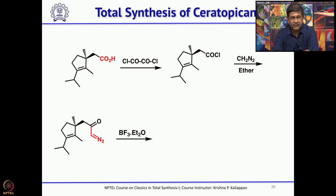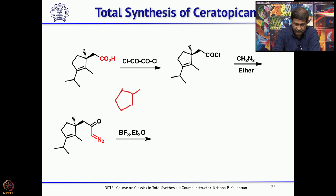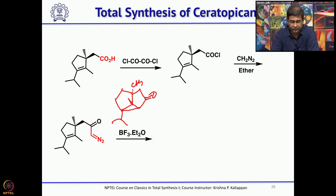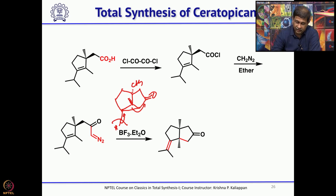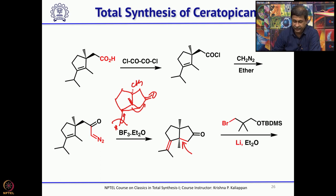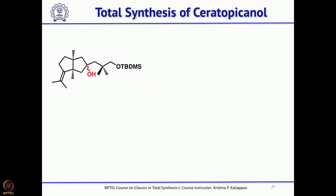This diazoketone on treatment with BF3·etherate undergoes three steps in one pot. The first step is cyclopropanation — it undergoes cyclopropanation of the double bond. Under acidic conditions, the cyclopropane then opens to give a carbocation. In this particular step, the diazo compound first forms the cyclopropane and then it opens, and in the process a quaternary carbon center is established stereochemically. A five-membered ring is formed. Then a five-carbon unit was added via bromine-lithium exchange followed by addition to the ketone to give the alcohol.